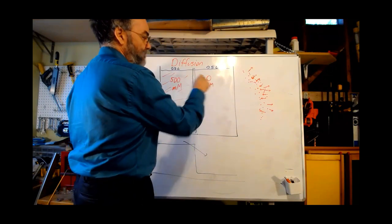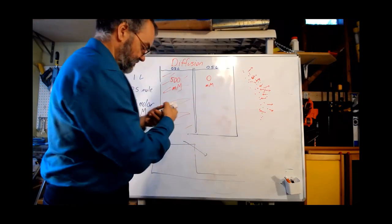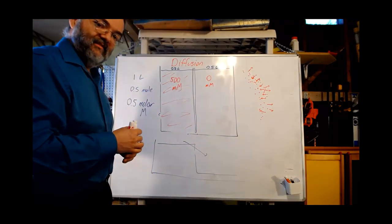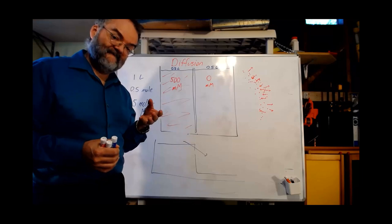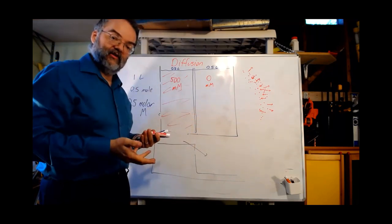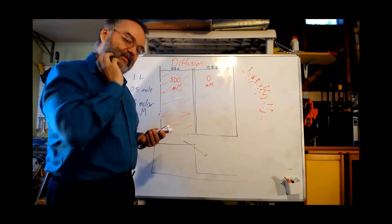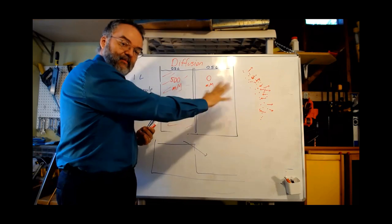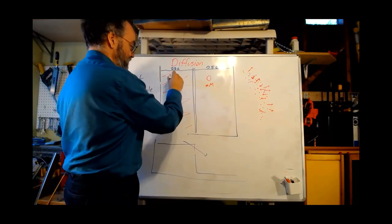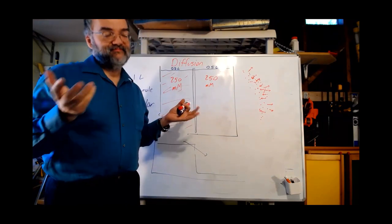When we take that barrier out, the concentration on the empty side goes up as dye molecules move over, and the concentration on the dye side goes down. If these two things are equal volume, when we allow diffusion long enough, half the dye molecules should be on each side — which means each side now has half as much dye in the same amount of water. It goes from 500 to 250 millimolar on each side.